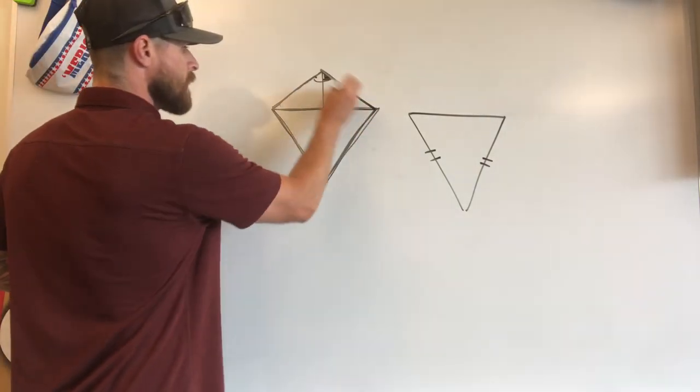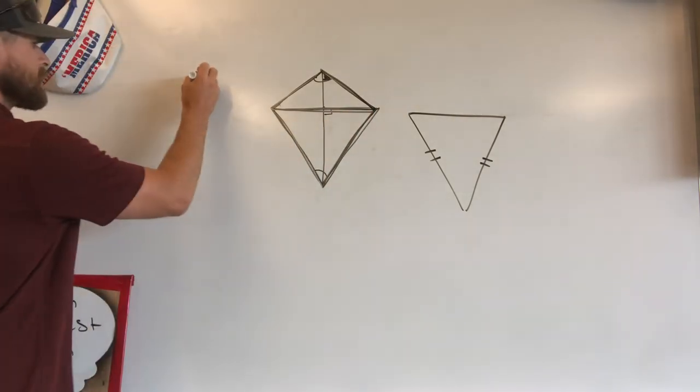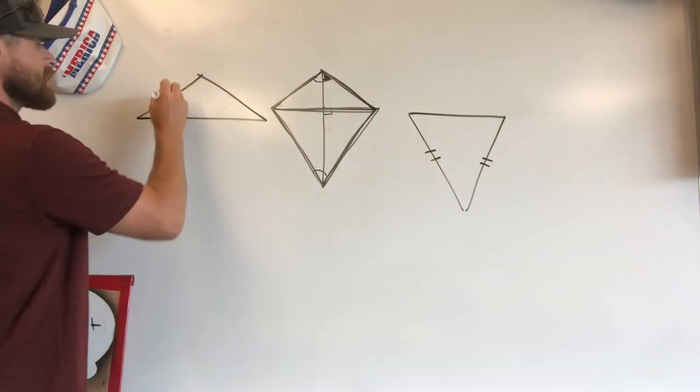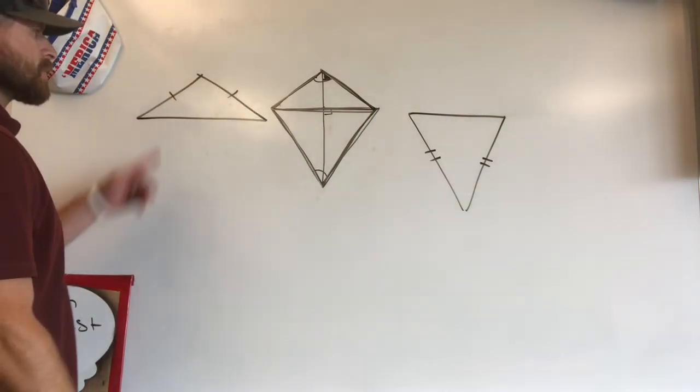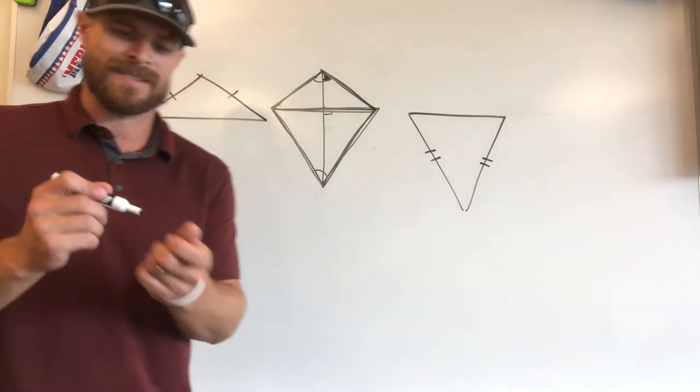Now up here, what do we have? We've got a triangle as well up here, which is also going to be an isosceles triangle because we've got matching sides there. Those sides are congruent. With the third side, that is not.